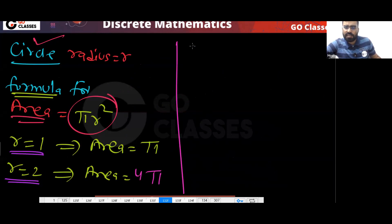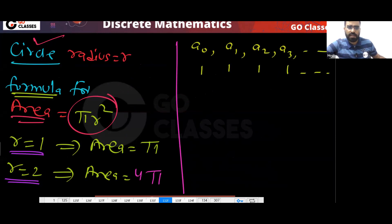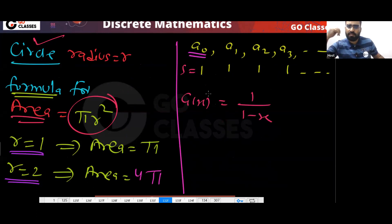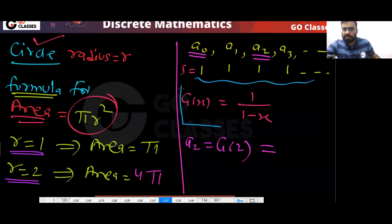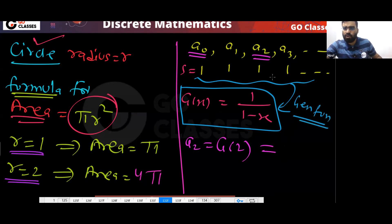For example, consider the sequence a₀, a₁, a₂, a₃ = 1, 1, 1, 1. The generating function for this sequence is 1/(1−x). Now if I want to find a₂, can I compute G(2)? G(2) would be 1/(1−2) = −1. Is this correct? No, this is wrong. So don't put values of x — the generative function is not a normal formula.